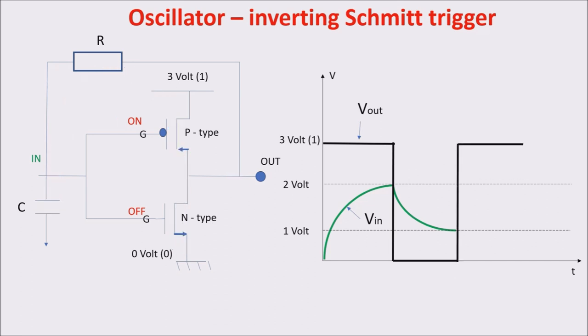So, the input voltage oscillates between the low and high threshold, and the output voltage oscillates between the high and low value, so between zero and one. This cycle repeats itself over and over, creating a square wave, which can be used as clock.